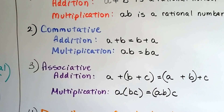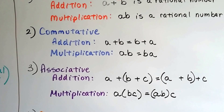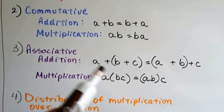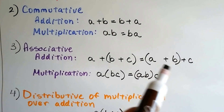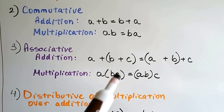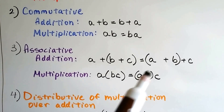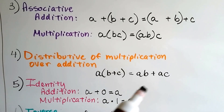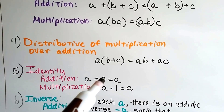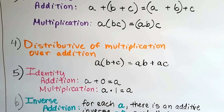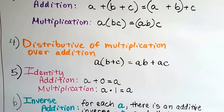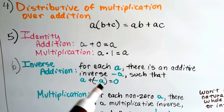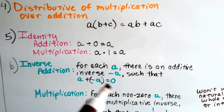The commutative property says a plus b can be switched around to b plus a, and for multiplication, we can switch the order from a times b to b times a. The associative property says for addition we can group b and c together and then add a, or group a and b together and add c, and for multiplication we can multiply b and c together first and then multiply a, or multiply a and b together and then multiply c. The distributive property of multiplication over addition says we can distribute a to b and add it to a times c. The identity property says adding zero to any number equals that number, and for multiplication, any number multiplied by one keeps its identity.